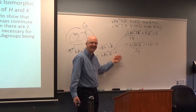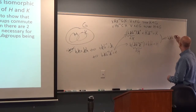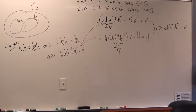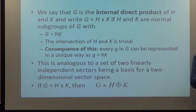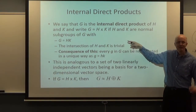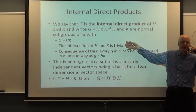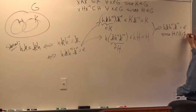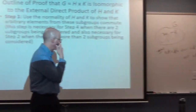I claim yes — because the intersection of H and K is trivial. This is part of the assumption of what it means to be an internal direct product. So that product equals the identity, since the intersection of H and K is just the identity. That does step one: arbitrary elements of H and K commute, which will be necessary for step four.